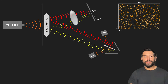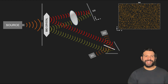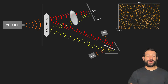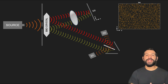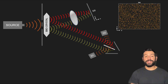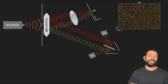So where most explanations of the delayed choice quantum eraser fail is in recognizing that the information photon is also part of the superposition of probability waves that can interfere with each other, rather than just a mere localized particle with separate which-path probabilities.